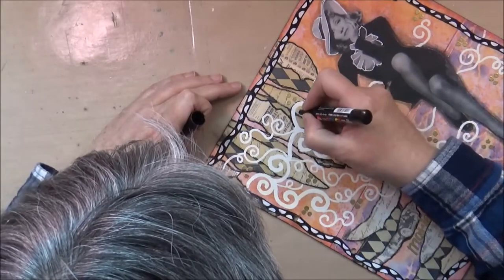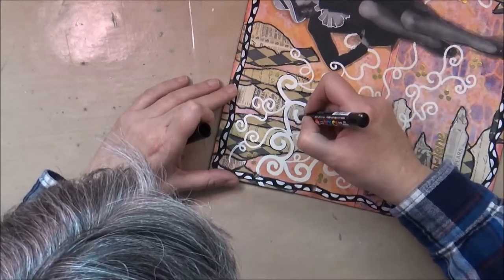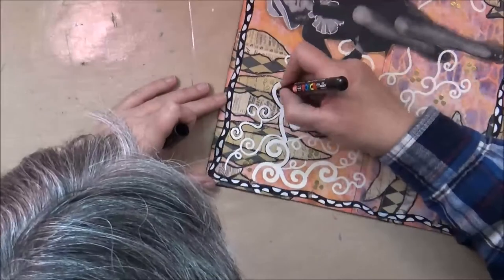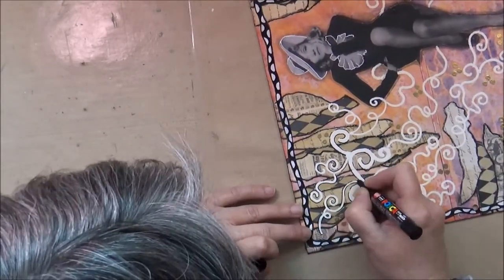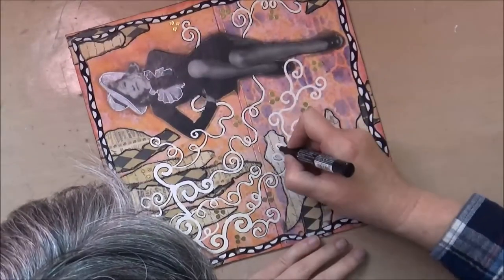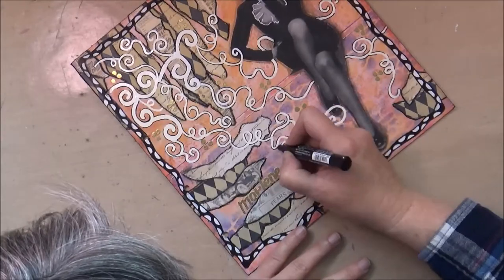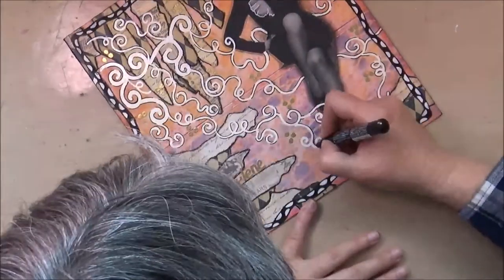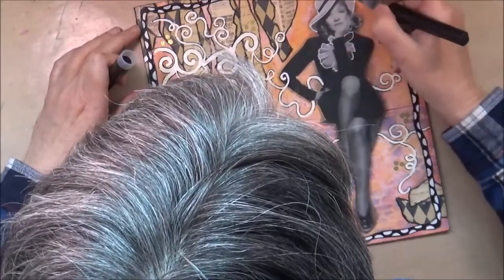Now I'm using again my black Posca to do a little bit of a broken outline just all around the white doodles. I think if I would have had a black embossing powder, I probably would have chosen that, but I think with the little outline here, even the white one kind of stands out from the background.